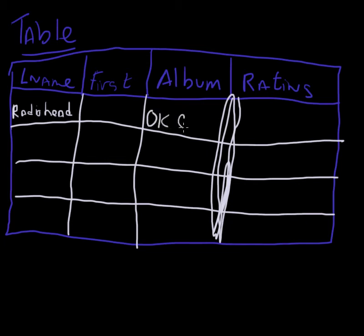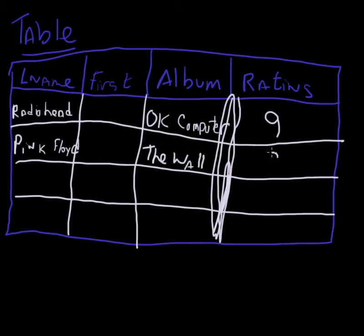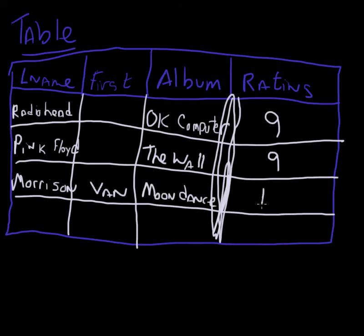Radiohead has an album called OK Computer, and I'm going to give it a rating of 9. I also want to store Pink Floyd — again, no first name — The Wall, and I'll give that a 9 as well. Then there's Van Morrison, with the album Moondance, one of my favorites, so I'll give that a 10.